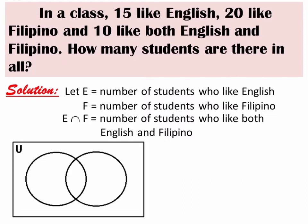We name one circle E for English and F for Filipino. Using the given data, what do you think will be written in the intersection of our Venn Diagram? It's 10. We will write 10 in this part because 10 students like both English and Filipino — they are part of both the English class and the Filipino class. Since we already have 10 students in the intersection, how many students like English only or Filipino only?